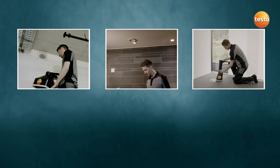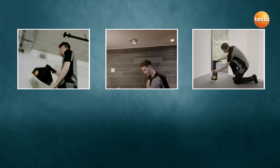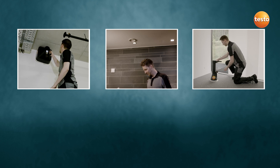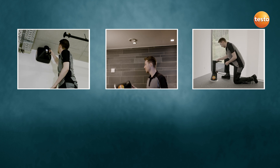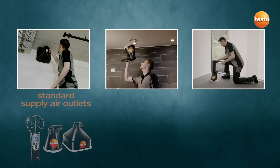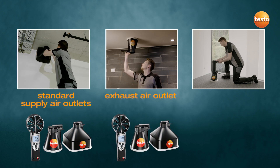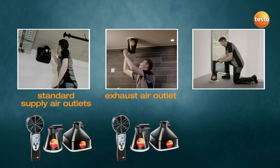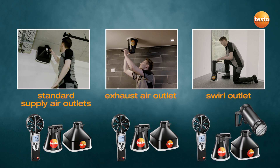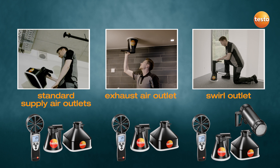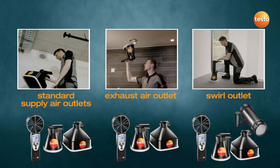Let's summarize which measuring tasks you can carry out with the Testo 417. First: measure faster at standard supply air outlets. Second: achieve accurate values at exhaust air outlets. Third: achieve utmost accuracy at swirl outlets, even with turbulent airflow.